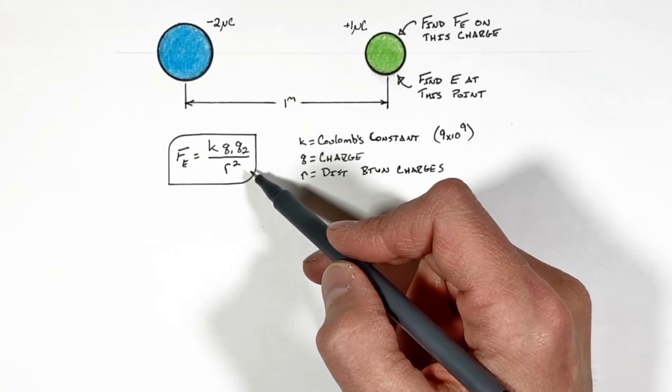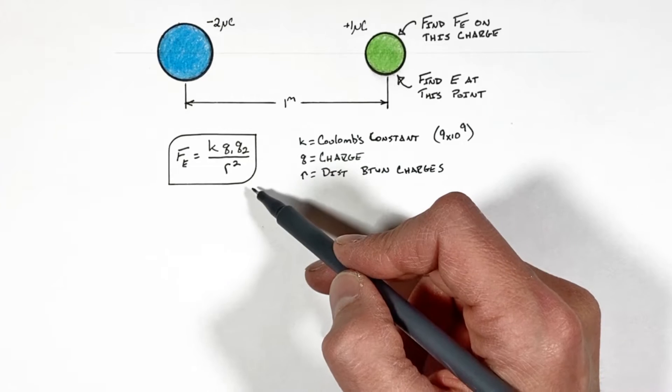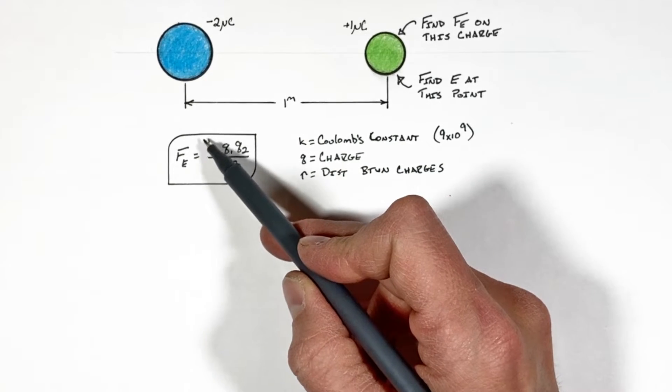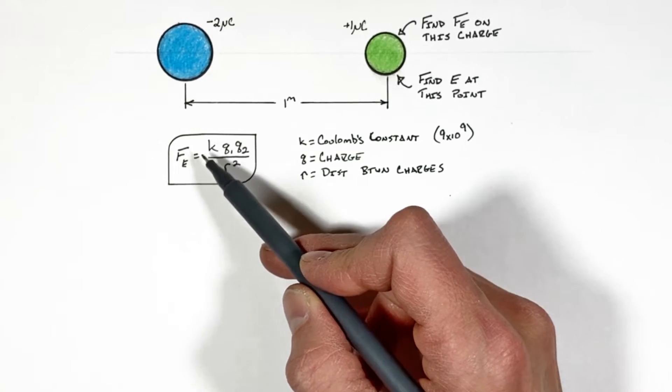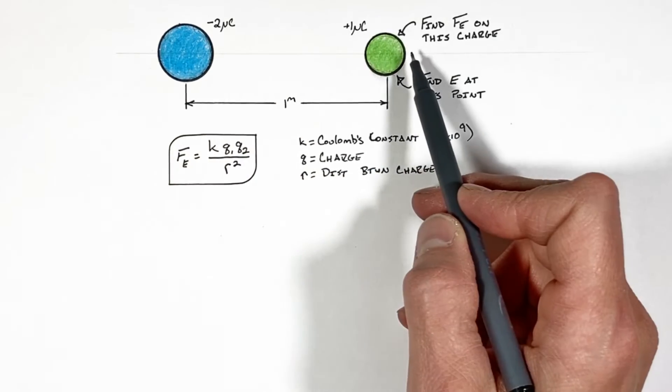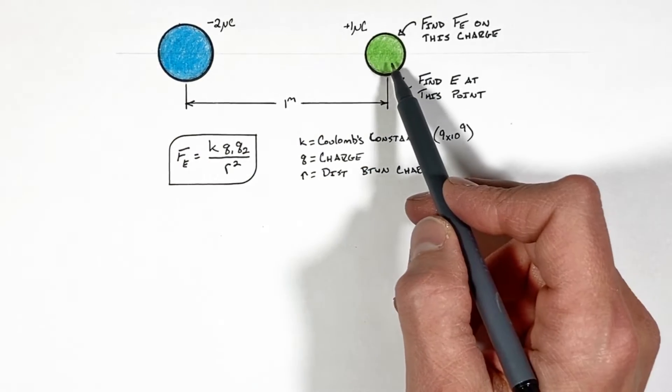This might look a little bit familiar, it looks a bit like Newton's law of universal gravitation. It's just rather than worrying about masses we have charge, and rather than dealing with the gravitational constant we now have this much larger Coulomb's constant.